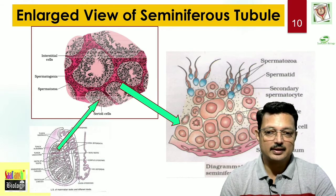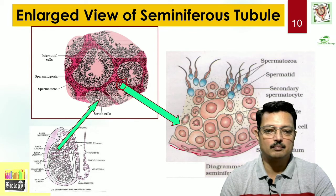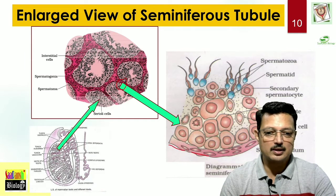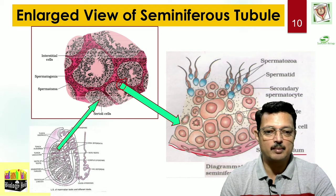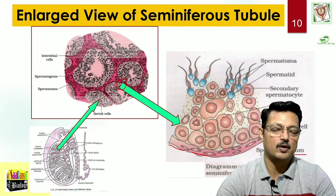When you take an enlarged view of the seminiferous tubule, there is a covering as already seen — the septal covering made by tunica albuginea. At the base you find two types of cells: the spermatogonial cells (spermatogonium) and the Sertoli cells, the pyramidal bigger ones. You can also find the different stages of formation of sperm.